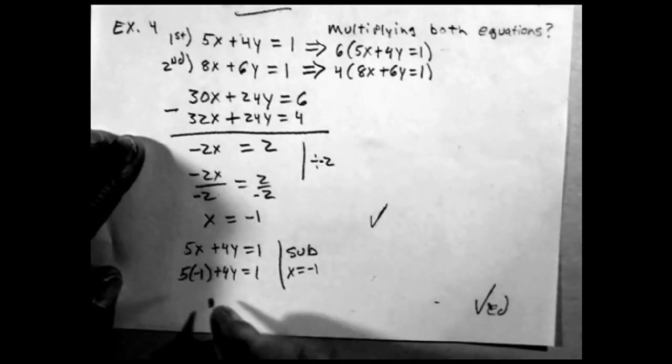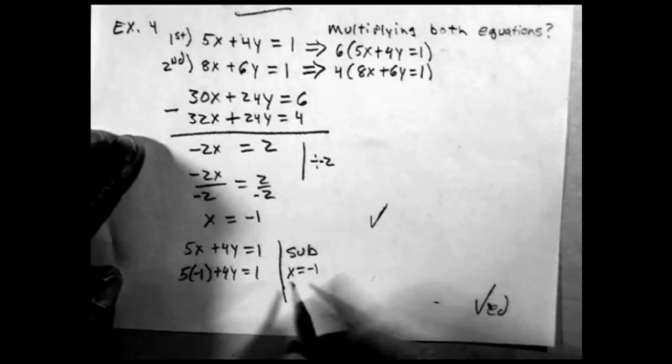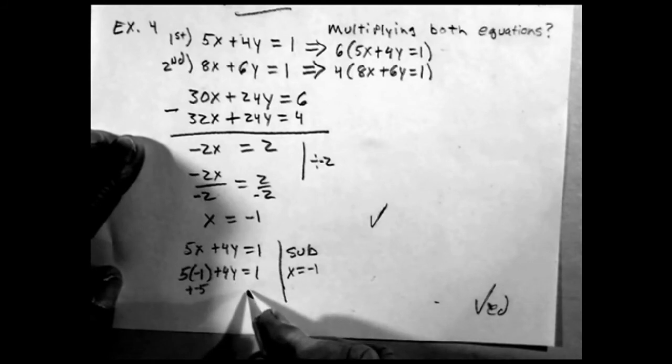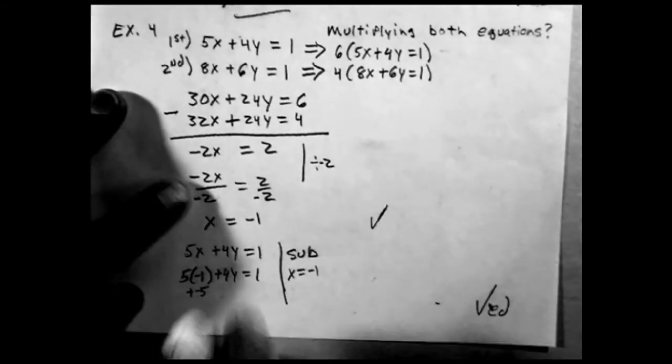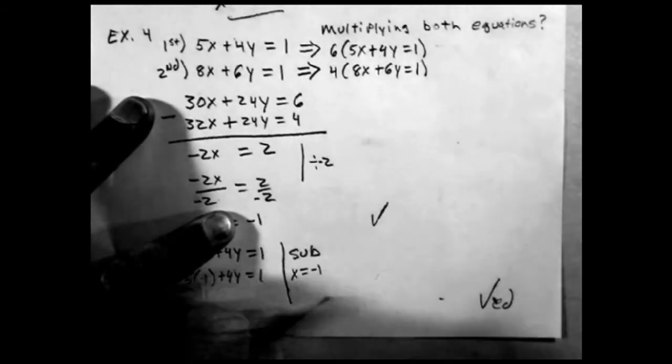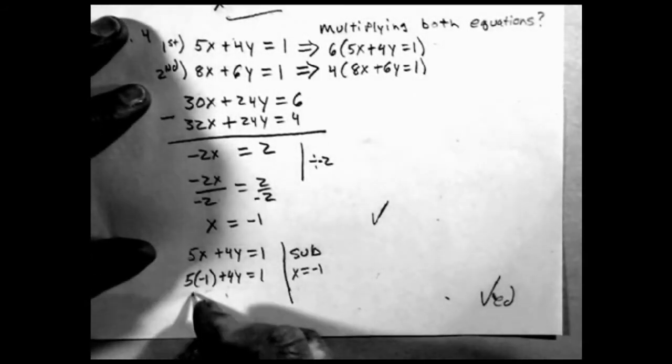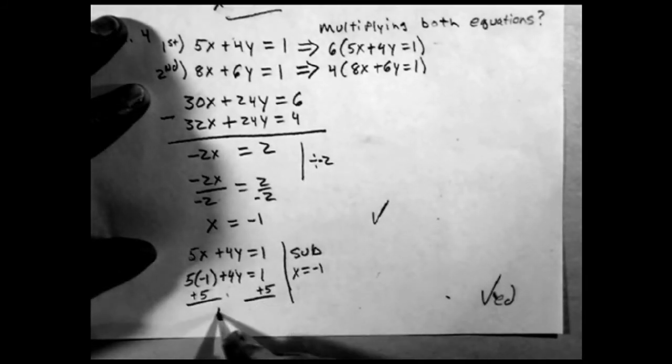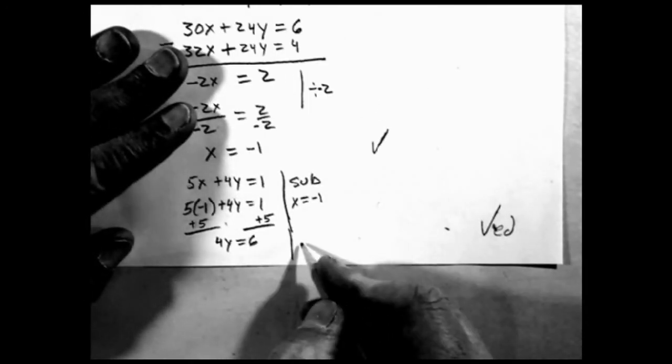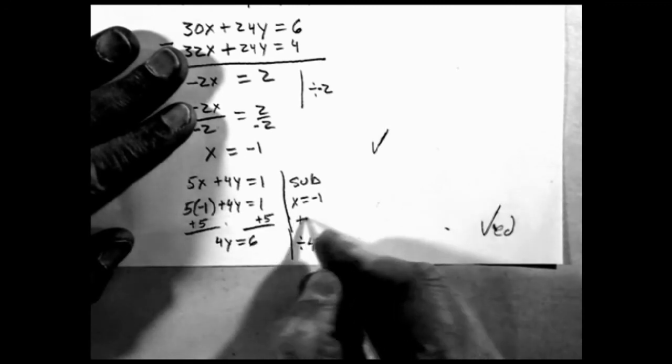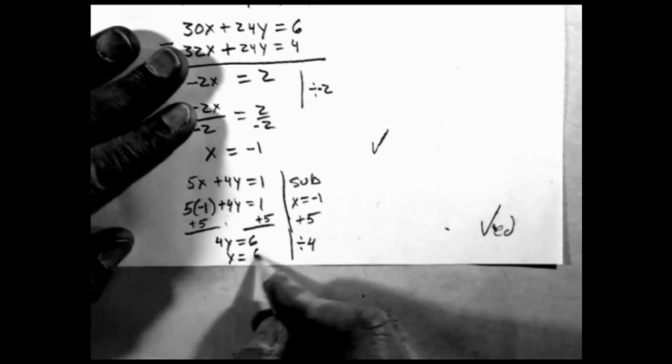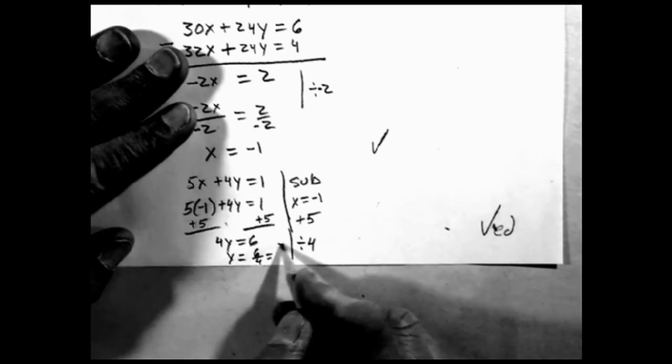It's negative 5. I'm going to add to the other side. And 5, divide both sides by 4, and y equals 6 over 4, which equals 3 over 2.